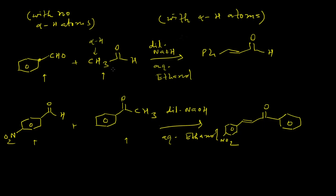What is happening here is that acetaldehyde is actually forming an enolate, and then this enolate is acting as a nucleophile and attacking the benzaldehyde carbonyl center. Also, benzaldehyde cannot form any enolate due to the absence of alpha hydrogen atoms.